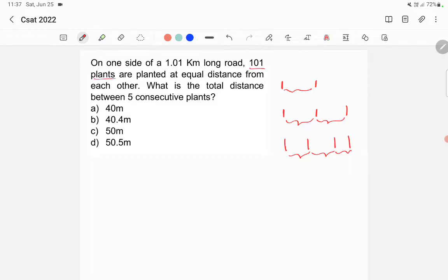Here it says that we have 101 plants, so how many distances will be between them? There will be 100 distances between them. What is the distance between two plants? The total length of the road is 1.01 kilometers.